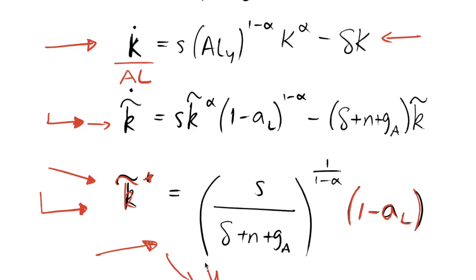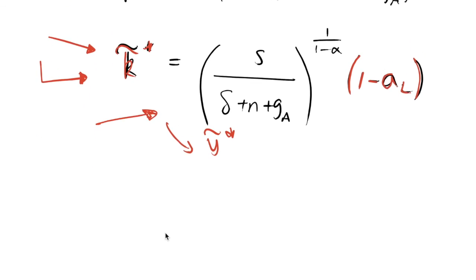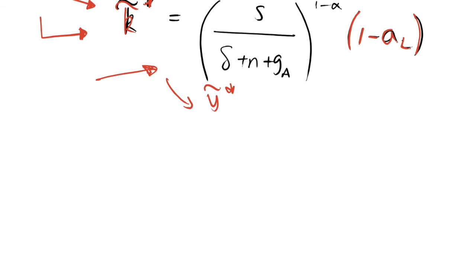From k-tilde-star we can straightforwardly work out y-tilde-star — output per effective worker or output per capita — since the economy is governed by this steady-state capital stock. That wraps up the Romer R&D model. Please leave a like if this was useful, check out the playlist for Solow growth model videos, and subscribe for more economics content.